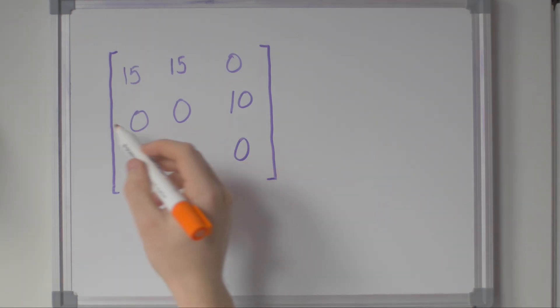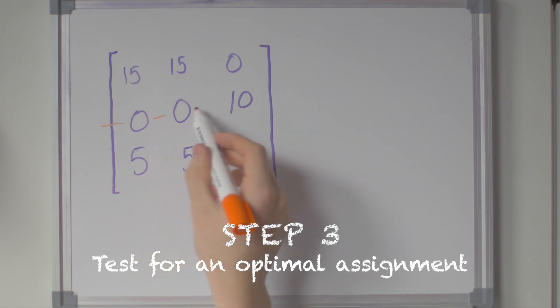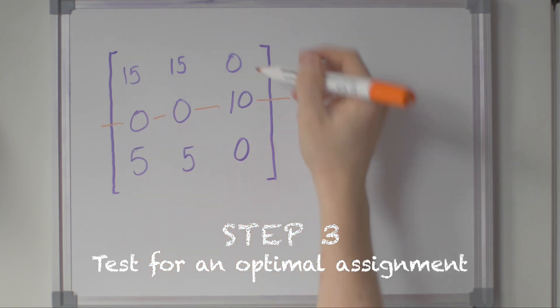Step three: test for an optimal assignment. Cover the zeros with straight lines. In this case, the number of lines is less than n, so we go to step four.